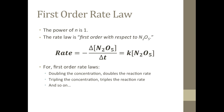First order rate laws are easy to recognize because at twice the concentration of reactant, you get twice the rate of the reaction. Or at 3 or 4 times the concentration, you get 3 or 4 times the rate, respectively.